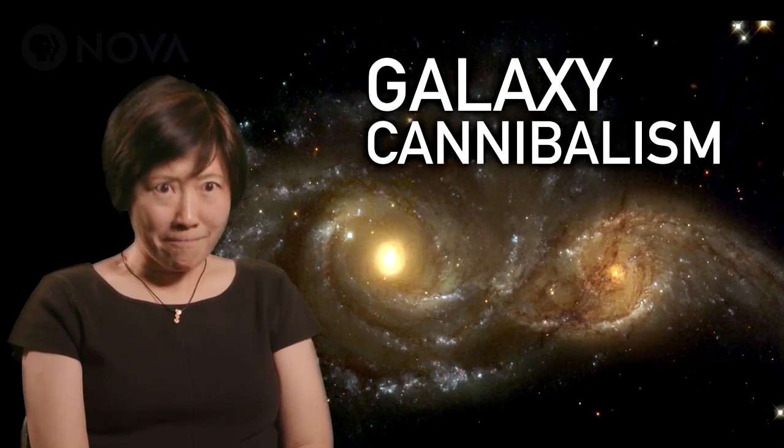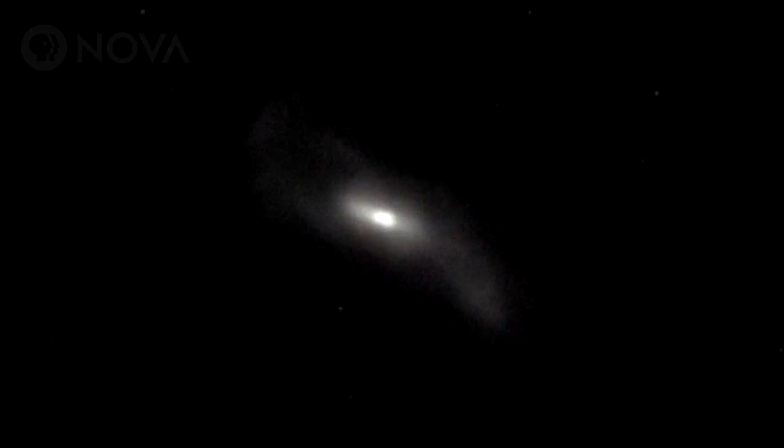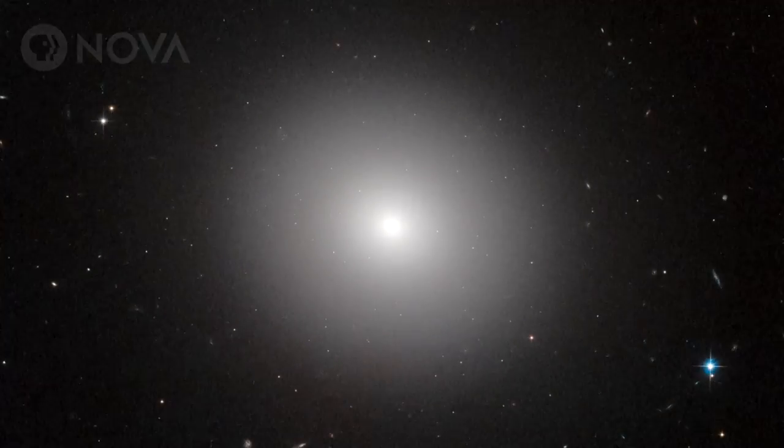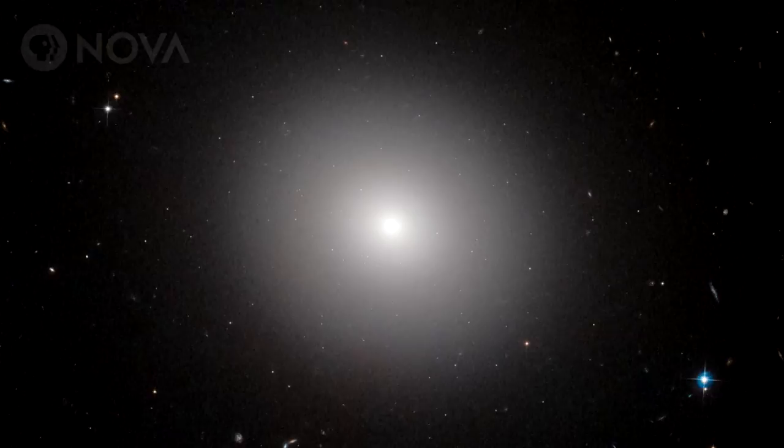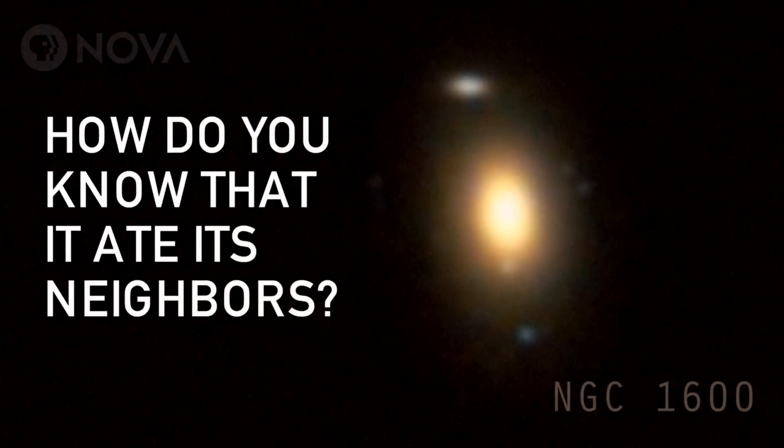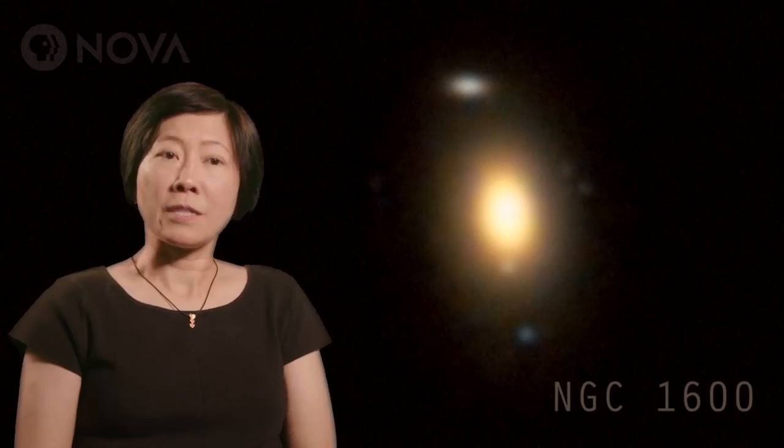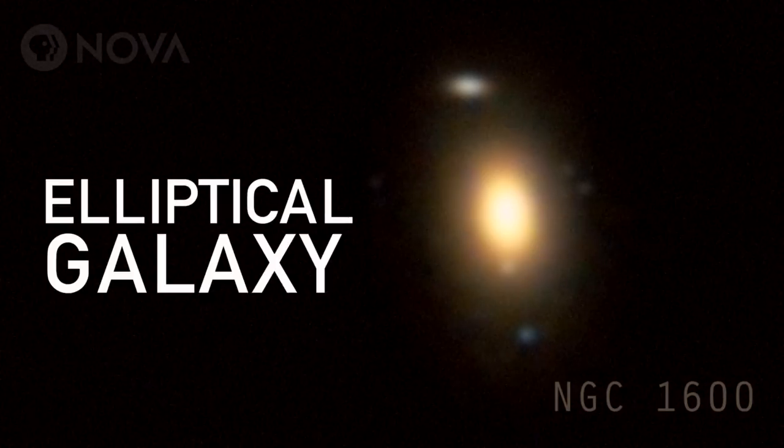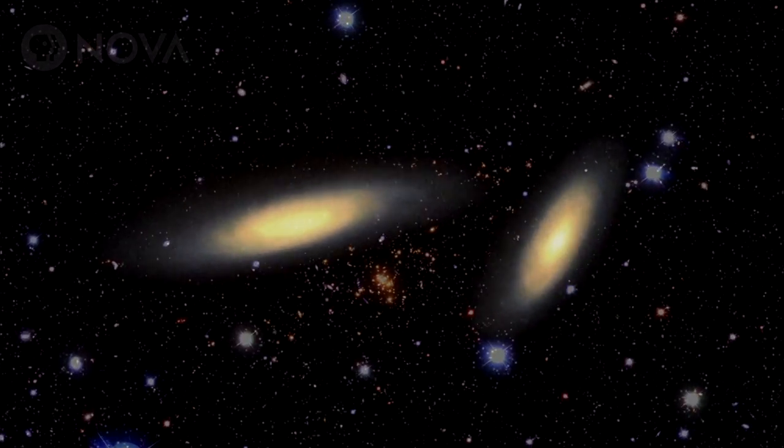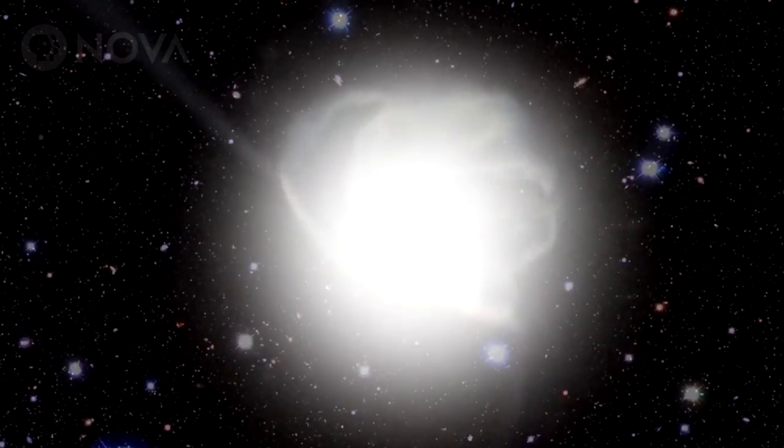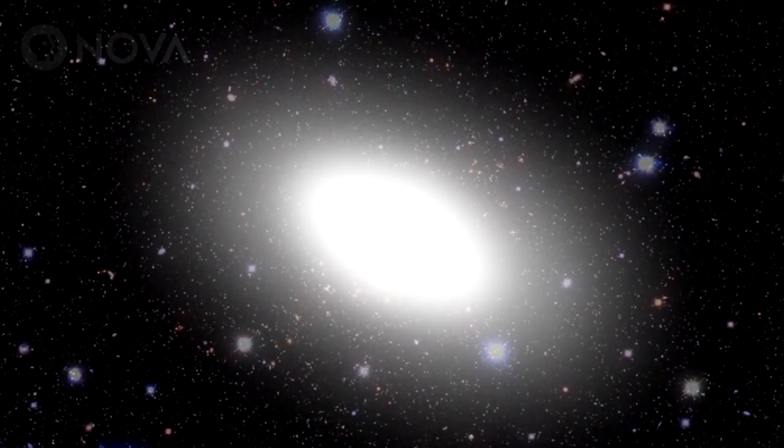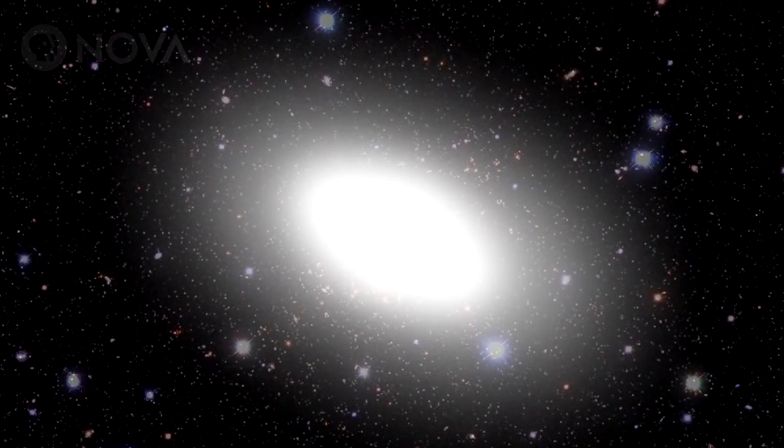Galaxy cannibalism. Two galaxies come together, merge, making a bigger galaxy, and forming this overwhelmingly large black hole at the center of 1600 by its shape. It's an elliptical galaxy. When you put two disks together, when they merge, they form an elliptical galaxy, the most massive galaxies.